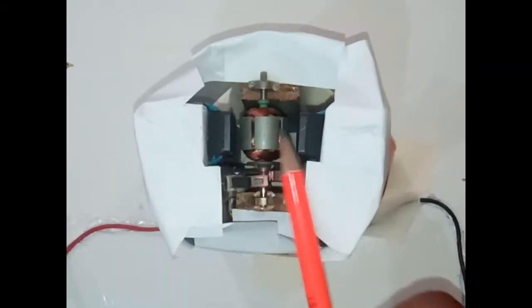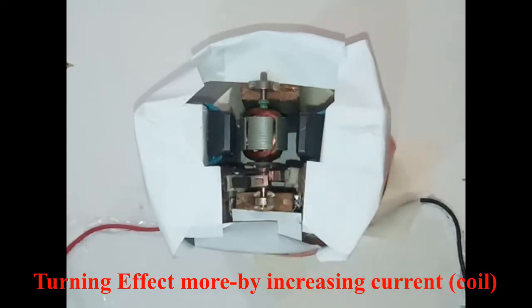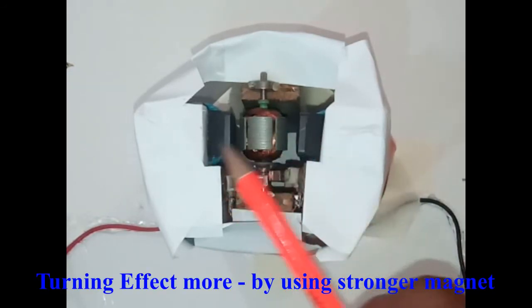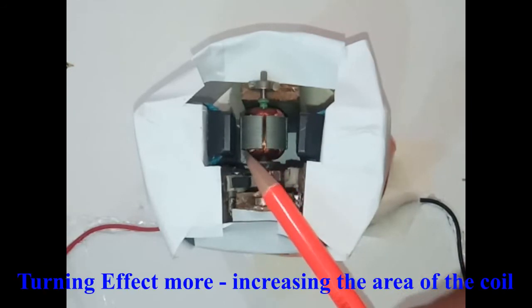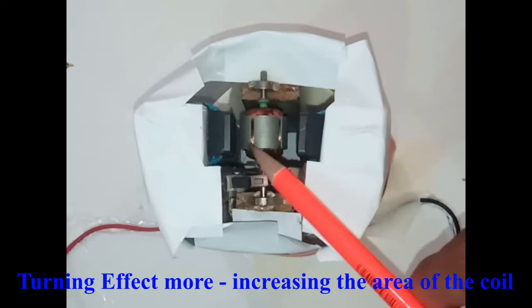By using Fleming's left hand rule, we can detect the direction of the movement of coil. The turning effect on the coil can be increased by increasing the current, using a stronger magnet, increasing the number of turns on the coil and increasing the area of the coil.